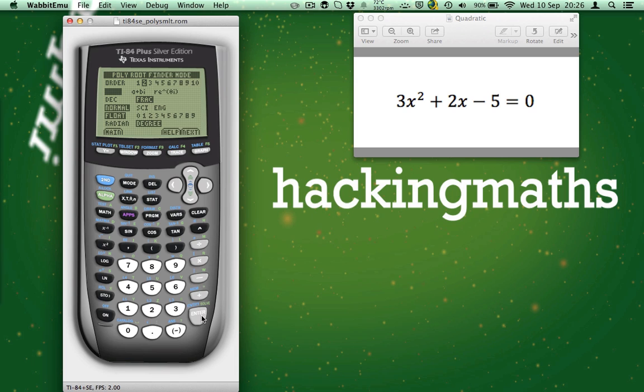Scrolling down, we can either choose Real Roots, Imaginary Roots or Polar Roots. We're expecting Real Roots, so have Real selected. Answers can either be Decimal or Fraction. Scroll down and select Decimal.